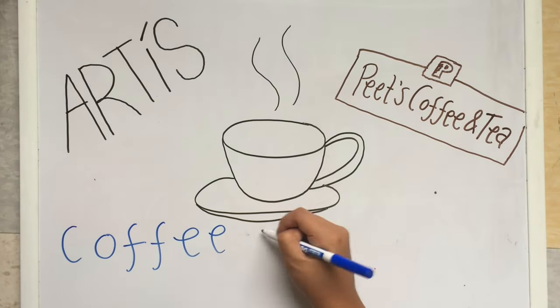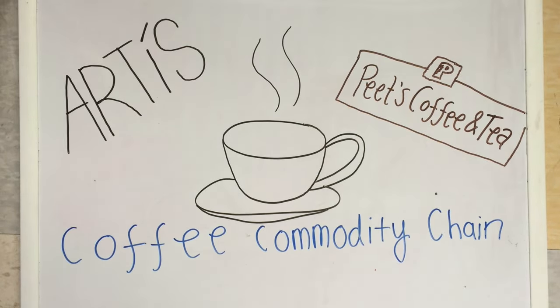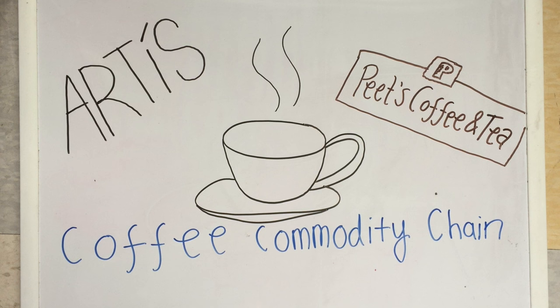To start, let's define a commodity chain. It is a series of links connecting many places of production and distribution, resulting in a commodity that is then exchanged on the world market.